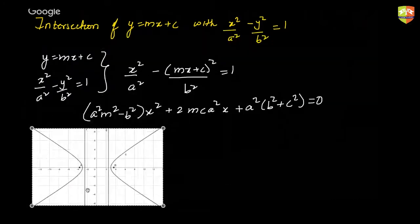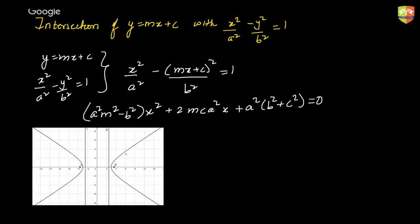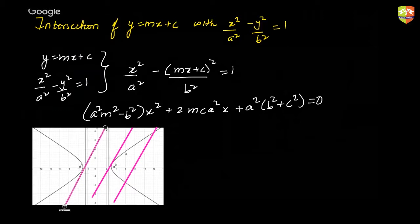So there can be three situations. There can be a situation where it is tangent. There could be a situation where it is cutting. And there could be a situation where it is not even cutting. We distinguish between these three situations just by looking at the discriminant of this particular quadratic equation.